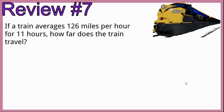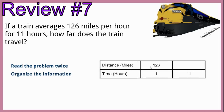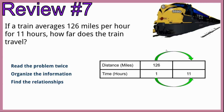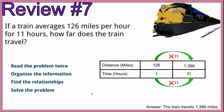Review number seven. If a train averages 126 miles per hour for 11 hours, how far does the train travel? We organize using a table — 126 miles per hour is our rate, traveling for 11 hours. We multiply both by 11 because 1 times 11 is 11. 126 times 11 is 1,386. So the train travels 1,386 miles.